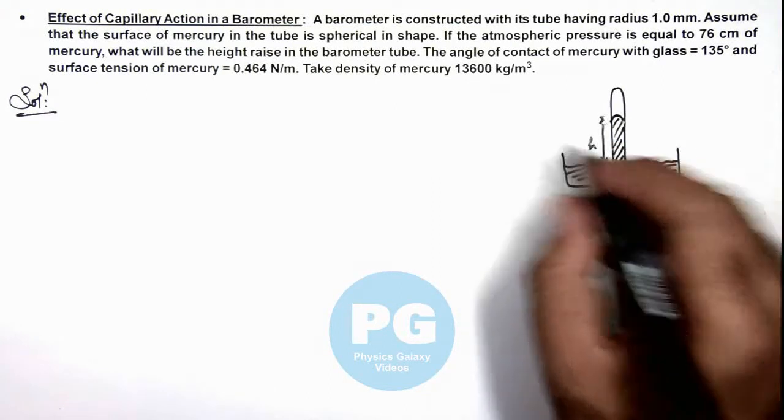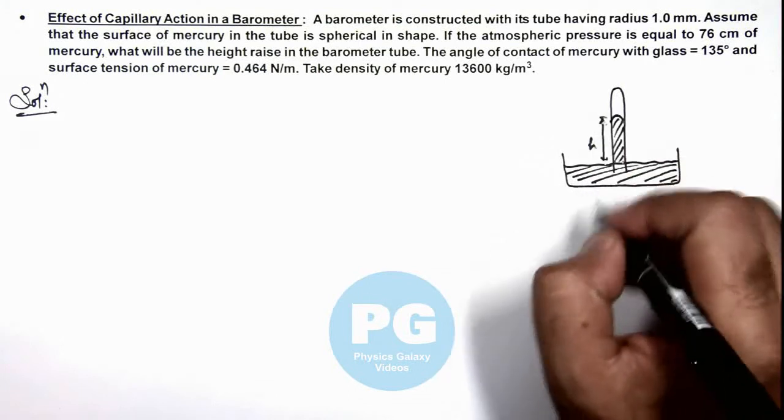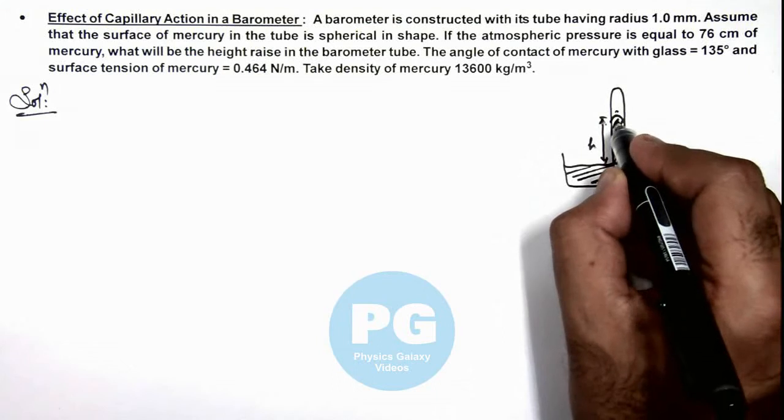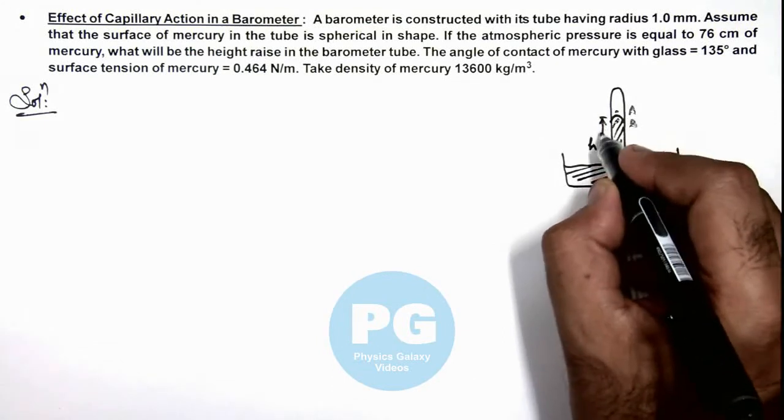Which we are required to find. To analyze the effect of surface tension in this case, we consider two points A and B above and below the mercury meniscus.